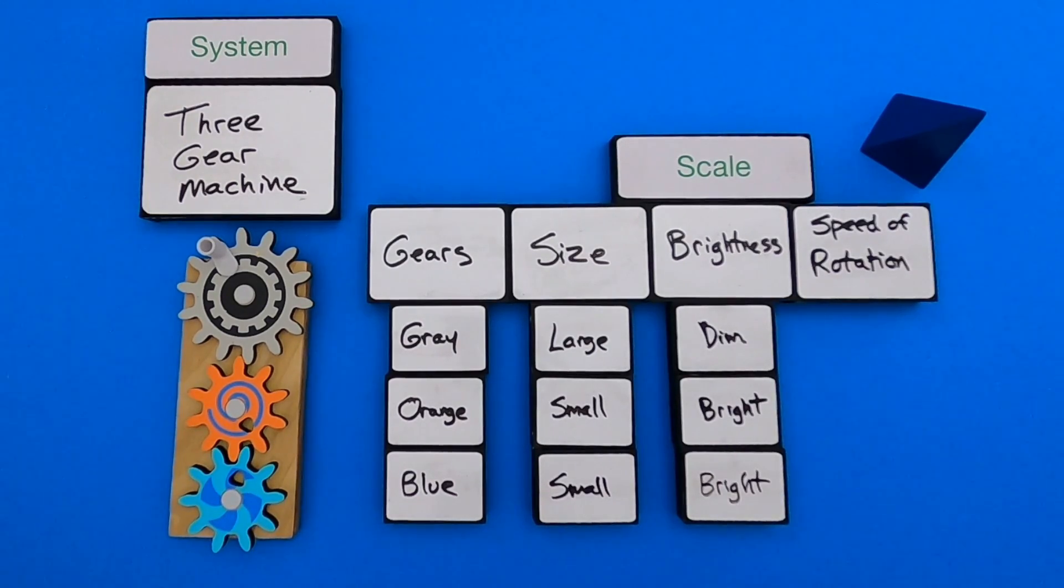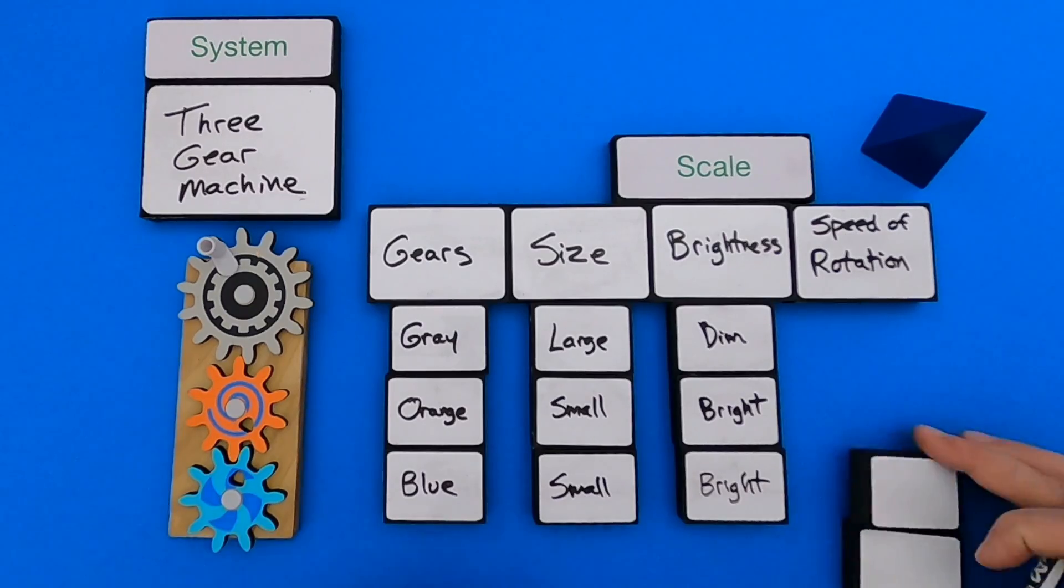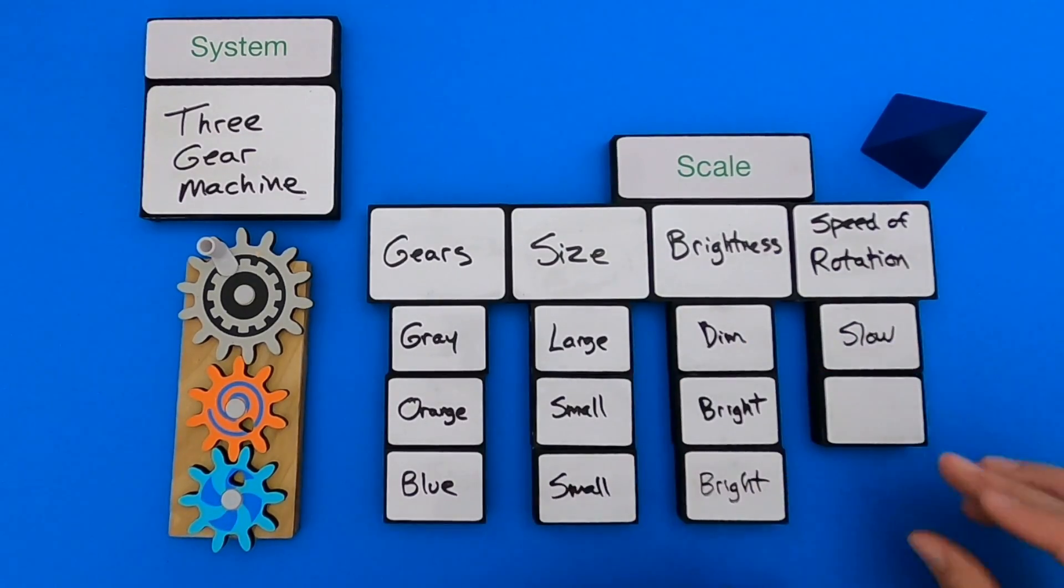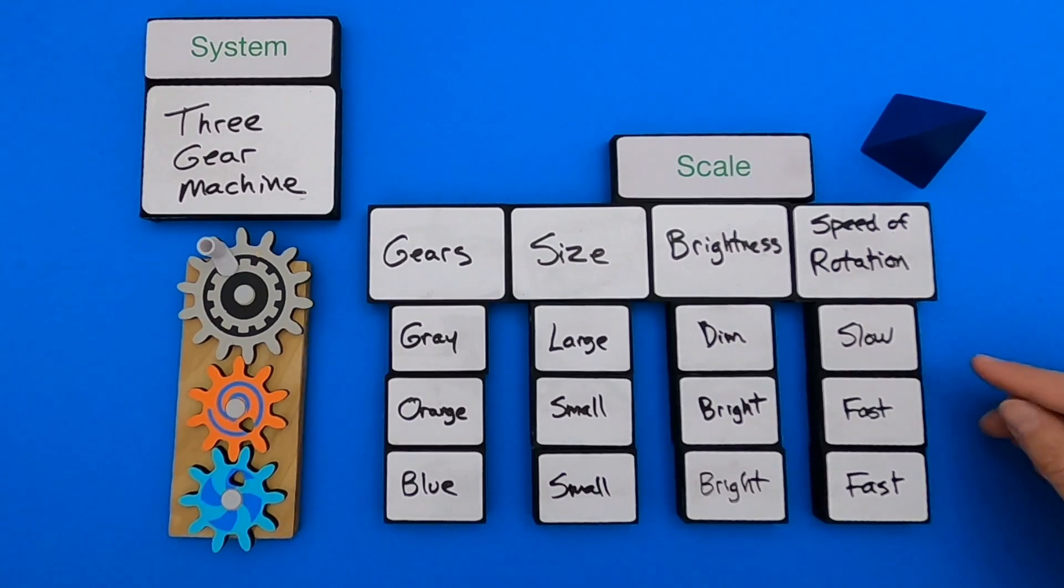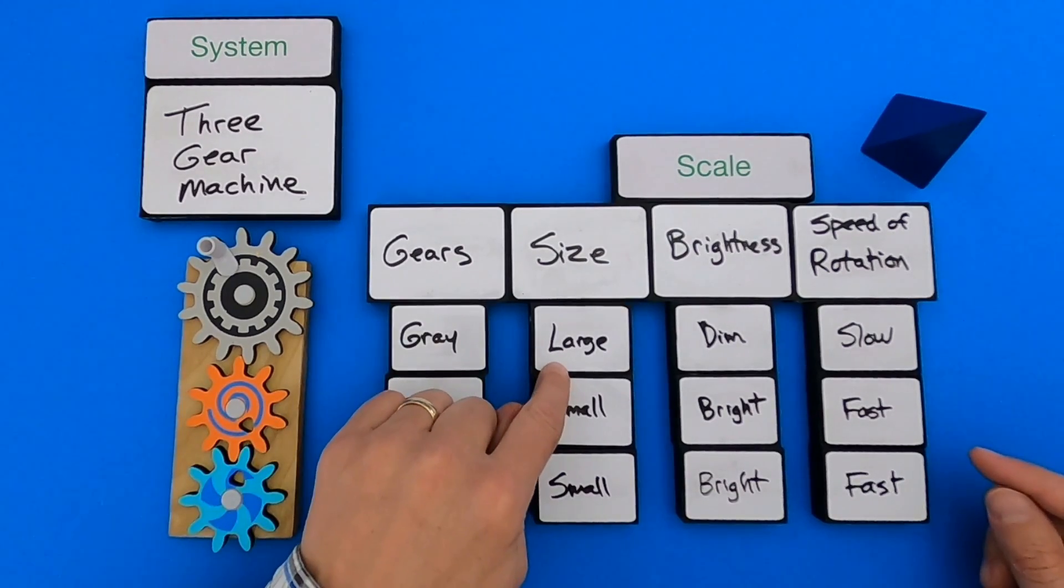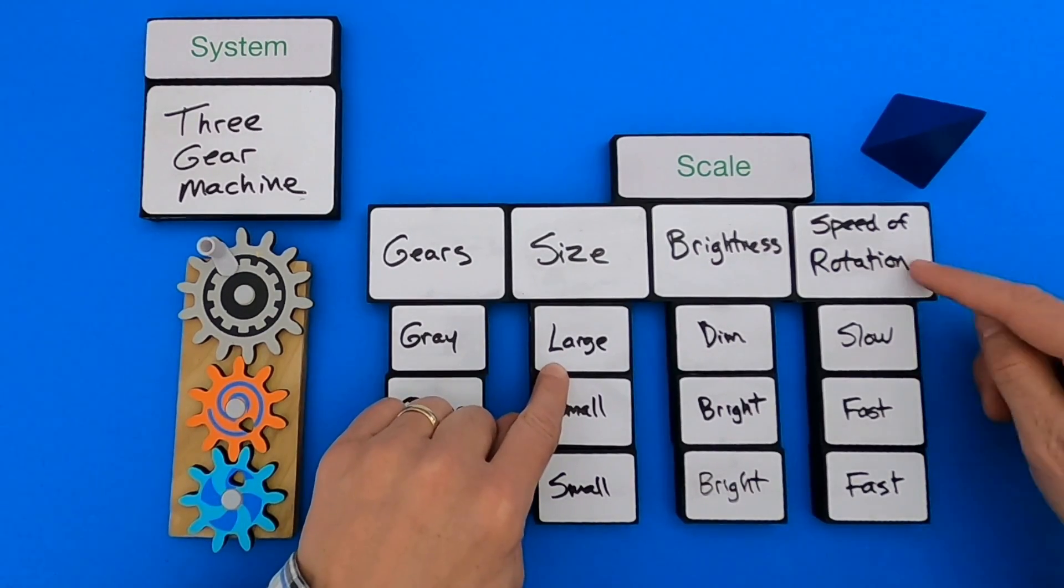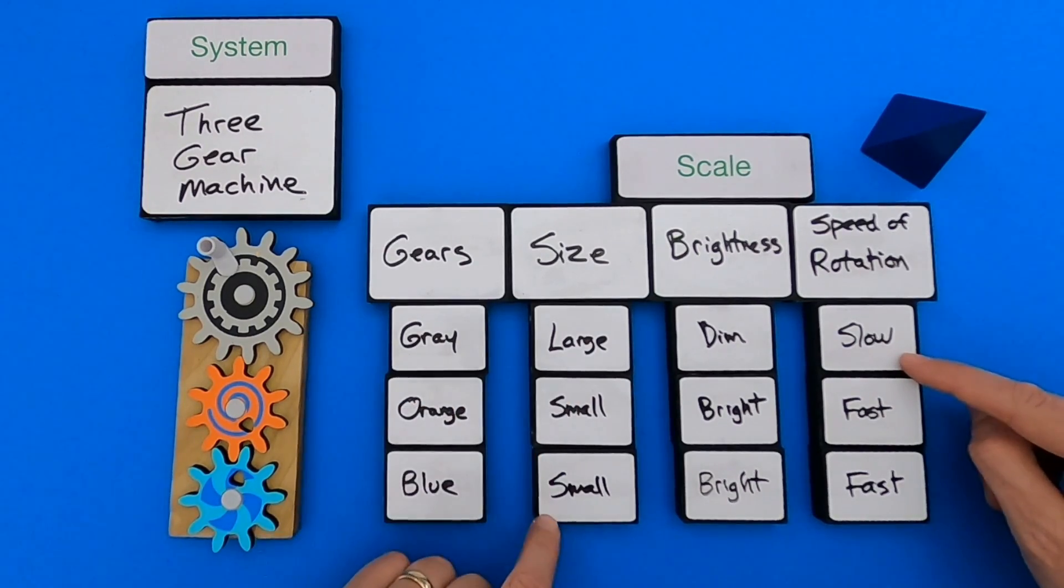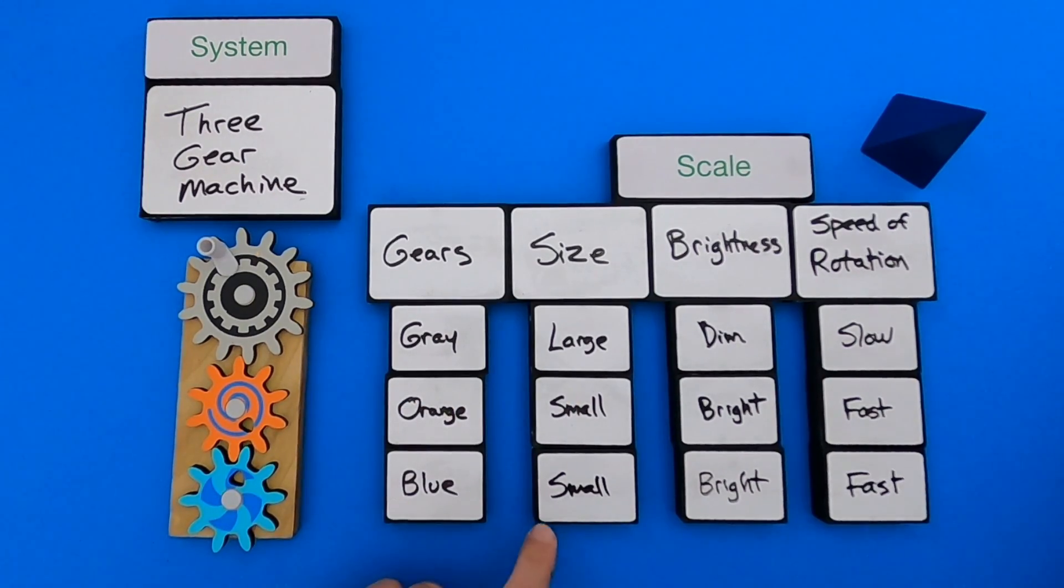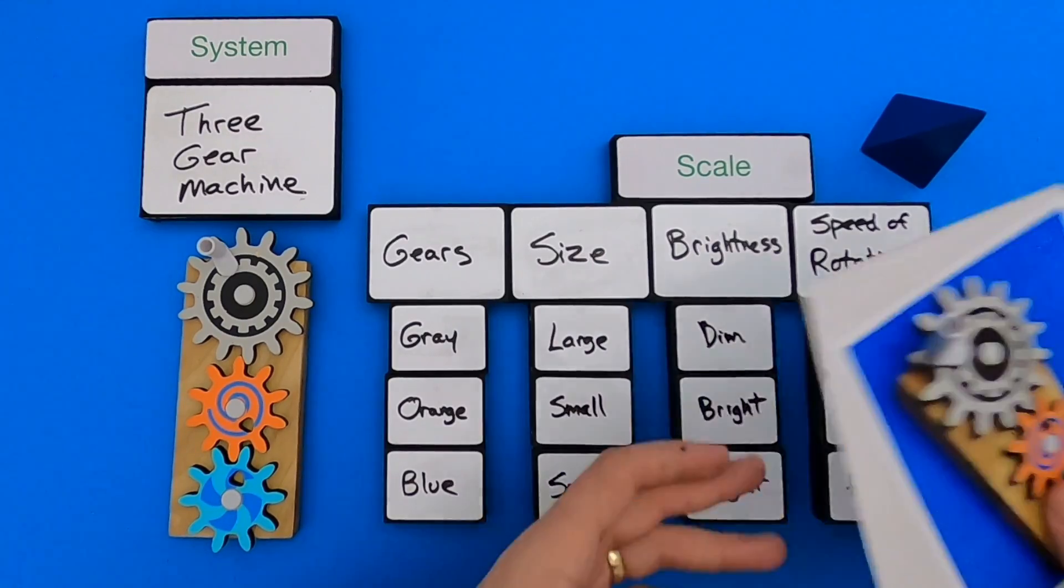So what I'm looking at is their scale when it comes to the speed of rotation. So one thing I noticed is that the gray gear, even though it's larger when it comes to size scale, actually is slower when it comes to the speed of rotation, and small gears are faster. And so I've showed you my thinking when it comes to the gear.